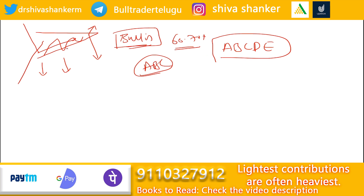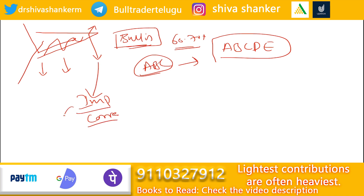So we have to identify these 5 waves in the triangle. Basically, we have two types of waves — impulsive waves and corrective waves. These triangles can appear in both impulsive and corrective waves.